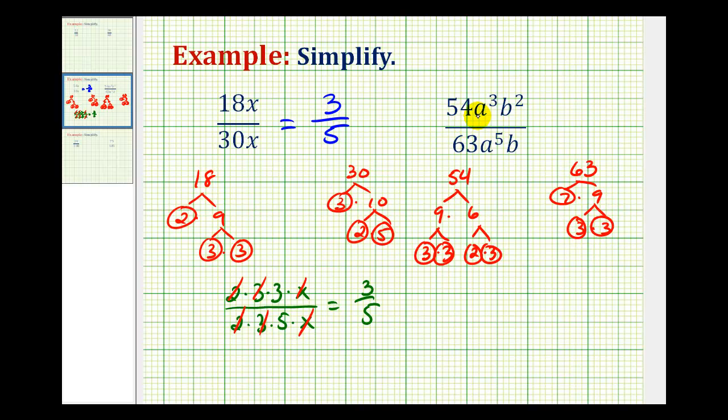Now for 54 a cubed b squared, I'll write 2 times 3 times 3 times 3. These factors came from the factor tree. Then we have 3 factors of a and 2 factors of b. And then for the denominator of 63 a to the fifth b, we'll have 3 times 3 times 7 for 63. Then we'll have 5 factors of a and 1 factor of b.